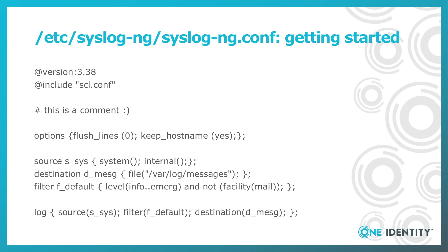You can place comments in the configuration using a hashtag. You can also set global options at the beginning of the configuration; many of these can be overridden later. Next, you can find a couple of building blocks: a source, a destination, and a filter. The configuration ends with a log statement which connects the three building blocks together.